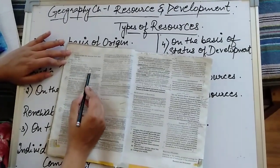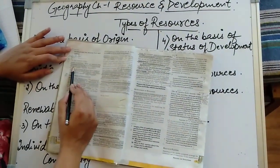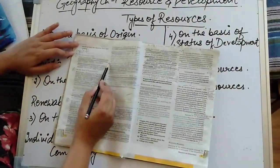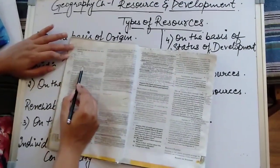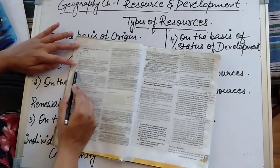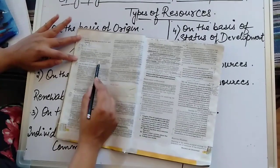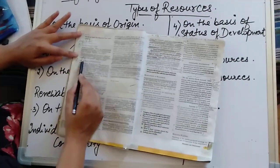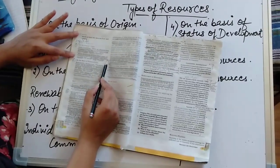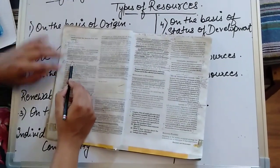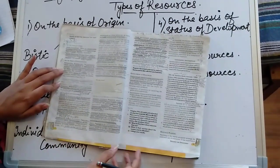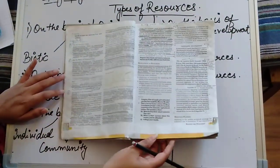Biotic resources are obtained from biosphere and have life such as human beings, flora and fauna. What are abiotic resources? Resources, those which are composed of non-living things are known as abiotic resources. For example, rocks and metals. We can underline the definitions from the book itself.